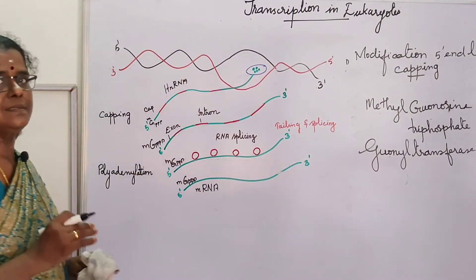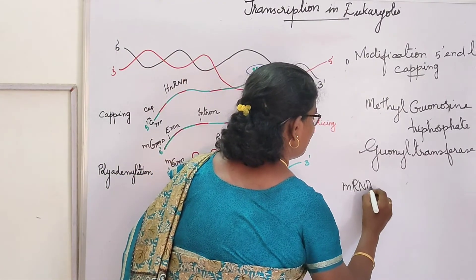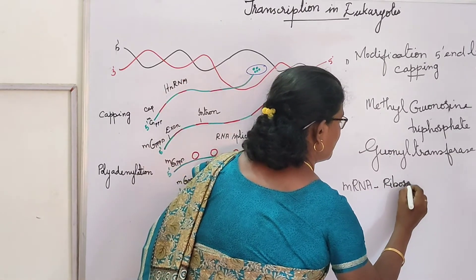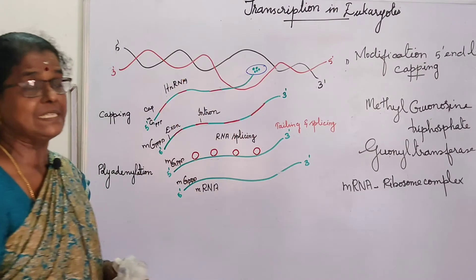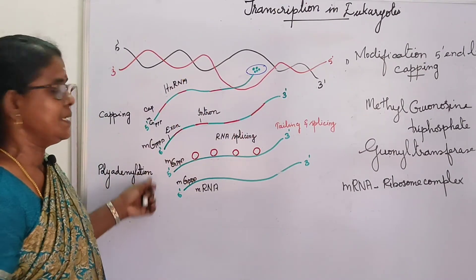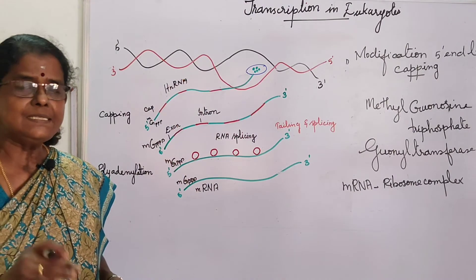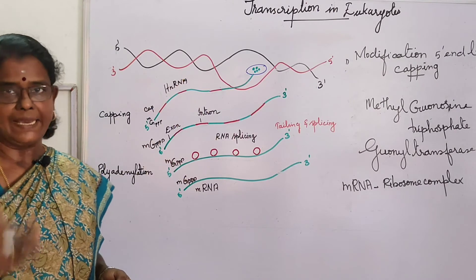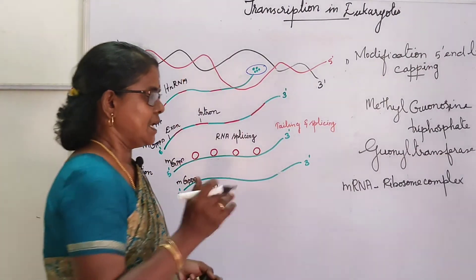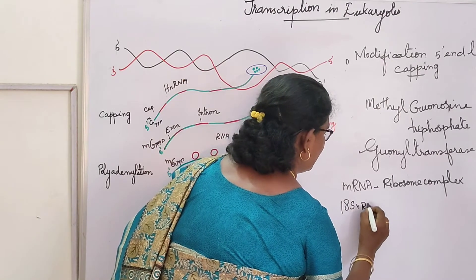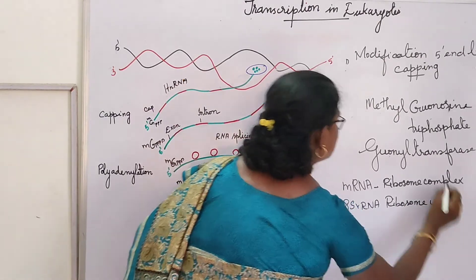Capping is essential for the formation of the mRNA-ribosome complex in translation. Translation is not possible if the cap is lacking, because the cap is identified by the 18S rRNA ribosome unit.